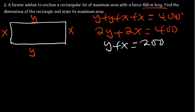This is the perimeter equation. We also know that area is given by A = X times Y — let's call that equation 2. They want us to find the values of X and Y, and also find the maximum area.